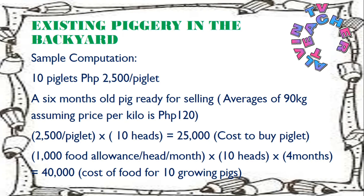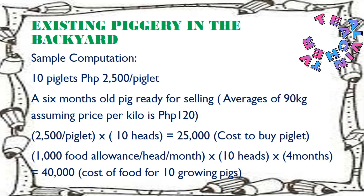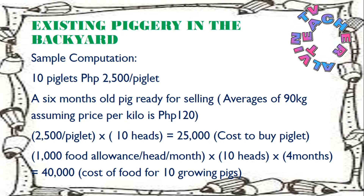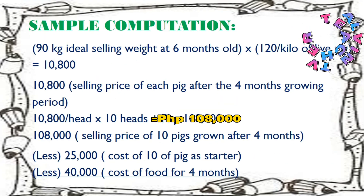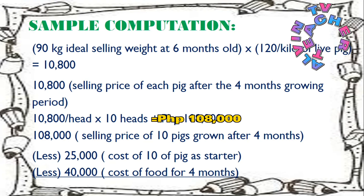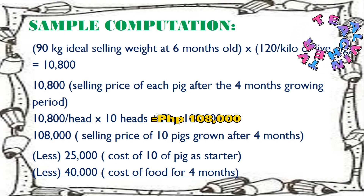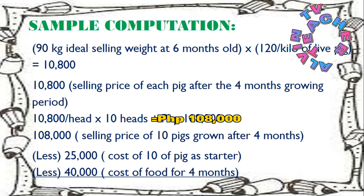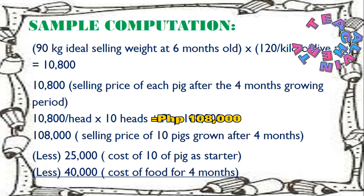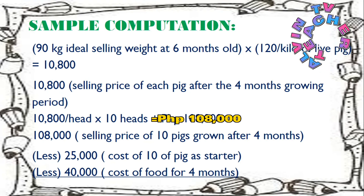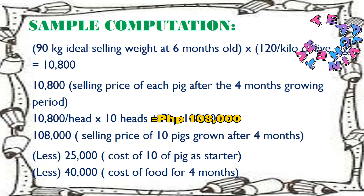1,000 pesos food allowance per head per month, times 10 heads per month, equals 40,000 pesos — cost of food for 10 growing pigs over 4 months. 90 kilograms ideal selling weight at 6 months old, times 120 pesos per kilo of live pigs, equals 10,800 pesos — the selling price of each pig after the growing period. 10,800 per head times 10 heads equals 108,000 pesos — total selling price of 10 pigs grown after 4 months.